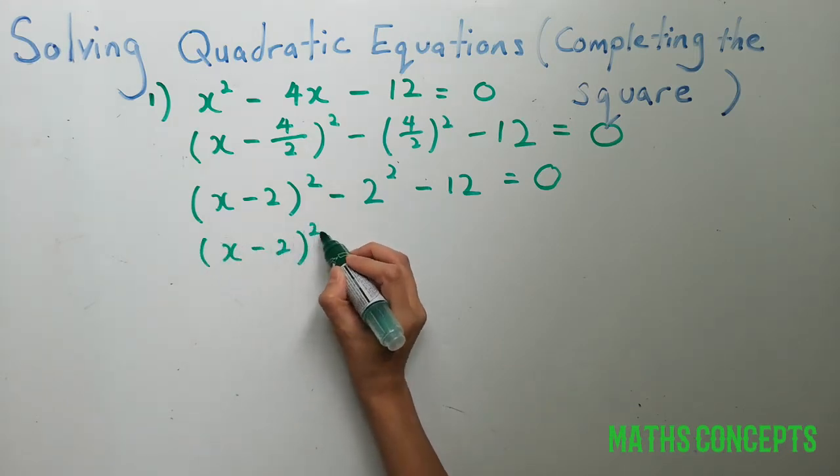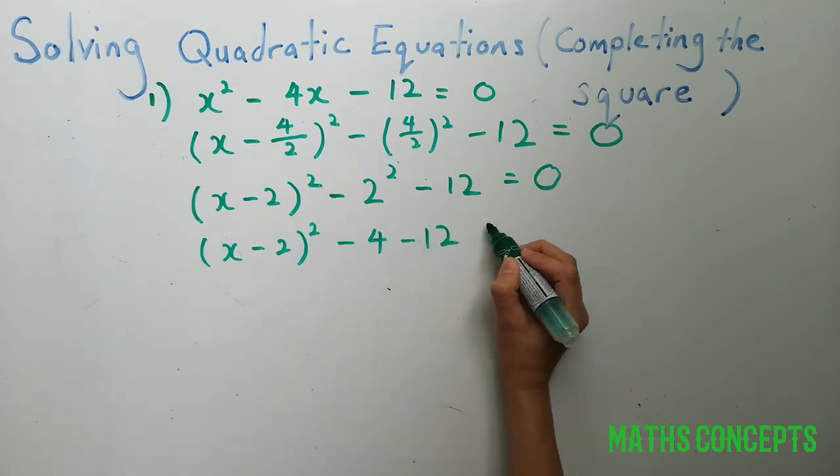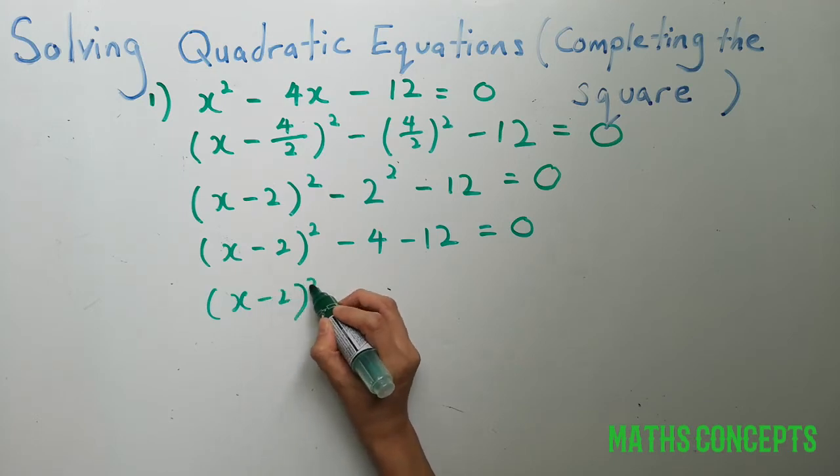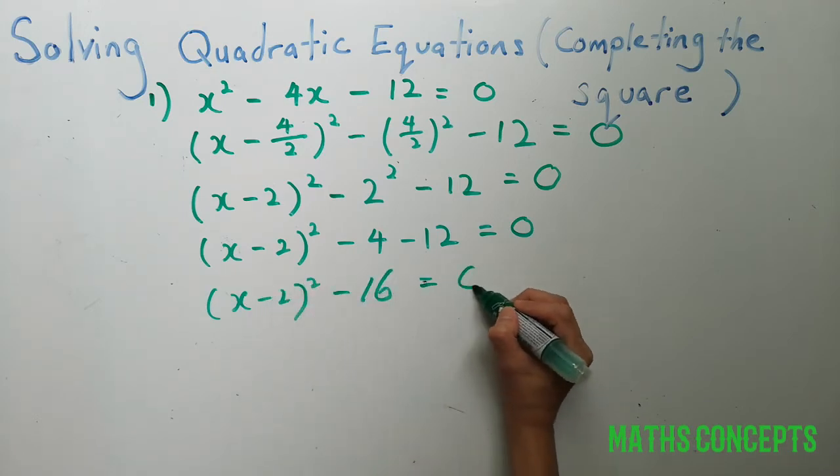Minus 4 minus 12 equals 0, which is x minus 2 squared minus 16 equals to 0.